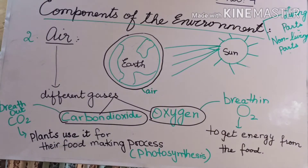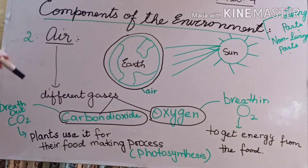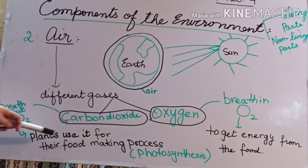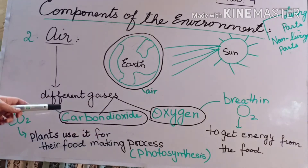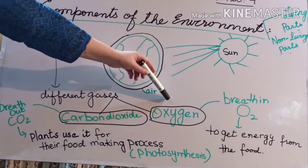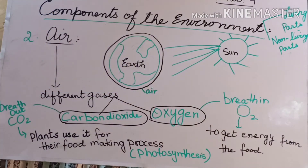The carbon dioxide we breathe out is needed by plants, and plants use it to make their own food through the process of photosynthesis. There is an important exchange of gases: humans and animals breathe in oxygen and give out carbon dioxide. That carbon dioxide goes to the plants; plants take it, make their food through photosynthesis, and give out oxygen, which is then transferred back to living things.